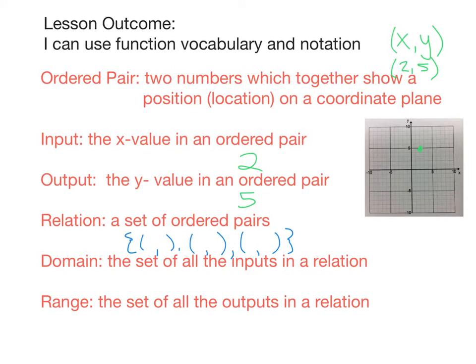Like this, with a bunch of different ordered pairs in there. So I could say 1, 2, and I could say negative 3, 4. I could say 7, negative 2. So that is a relation. It's a set of ordered pairs.